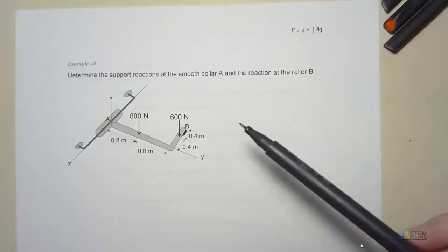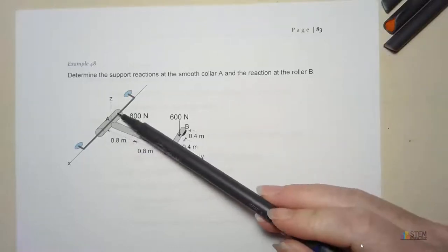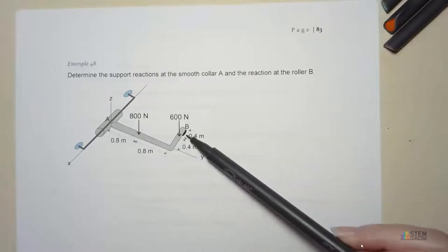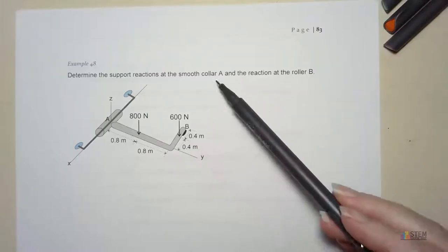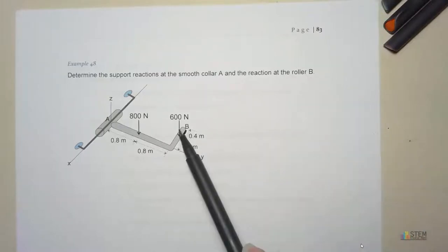Here we have a rod with a smooth collar here and a roller at B. What we want to do is find the support reactions at A and then B. We also have these two applied forces. So this is one of our 3D equilibrium problems.